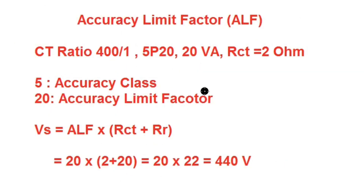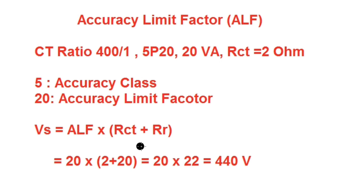For protection class CT rated as 5P20, 5 is the accuracy class and 20 is the accuracy limit factor under rated burden of 20 VA. We can calculate the saturation voltage for the protection class CT: Vs = ALF × (RCT + RR), where RR is the rated burden in ohms. Since CT secondary current is 1 A and rated burden is 20 VA, RR = 20 Ω. So Vs = 20 × (2 + 20) = 20 × 22 = 440 V.